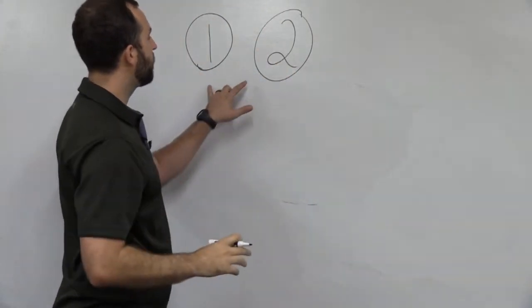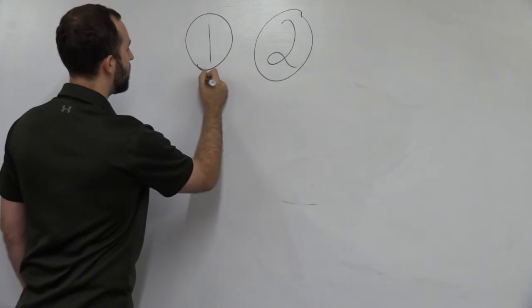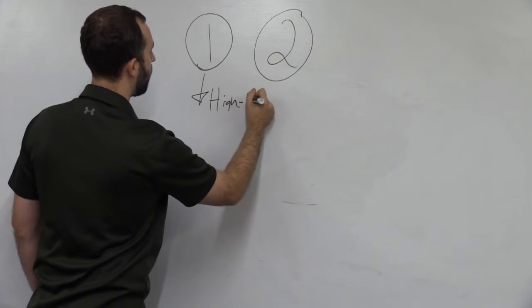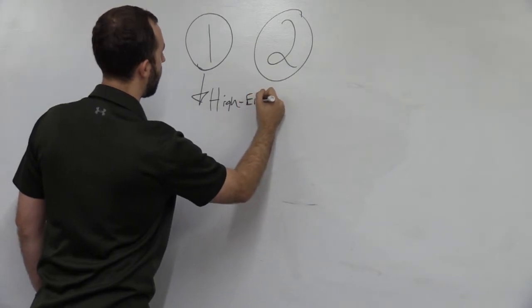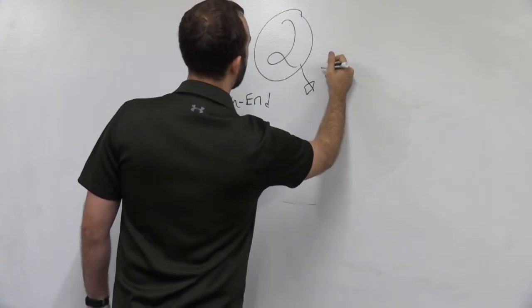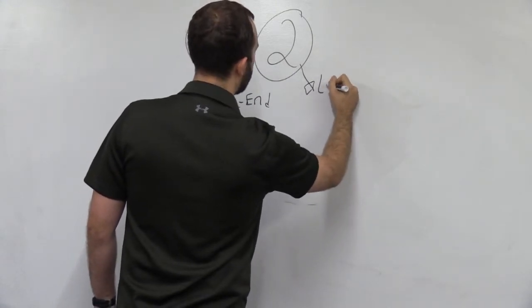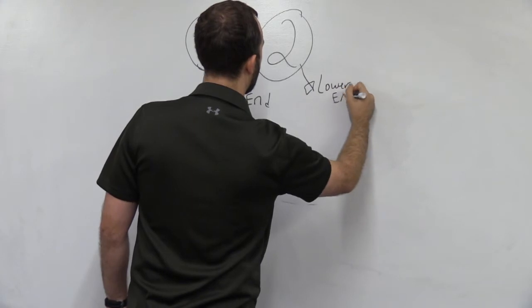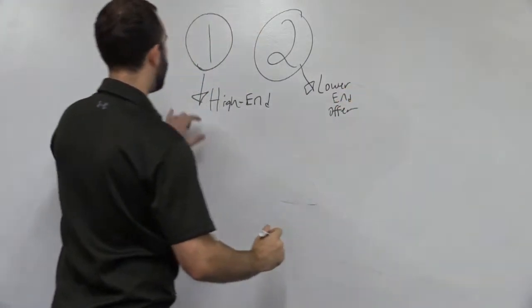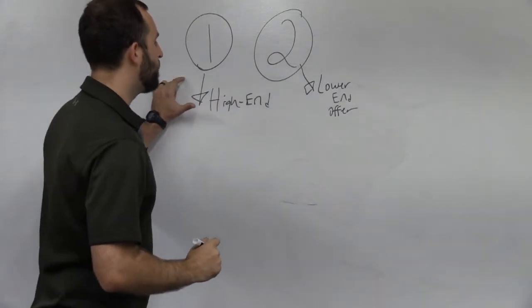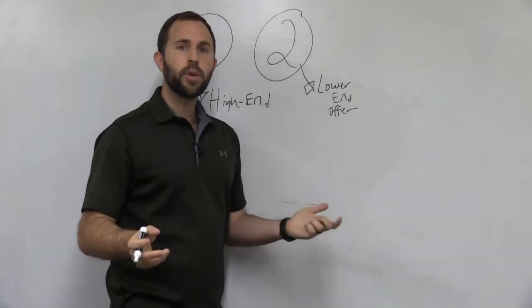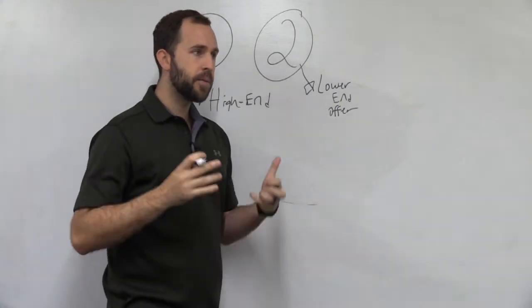Now, what I have here is this is the high-end offer. And this is, I'm just going to say the lower end offer. Now, when I say high-end offer, I'm talking about a program that's between let's say $400 and $800 a month.